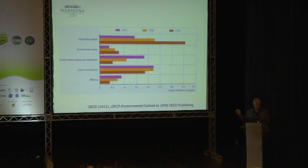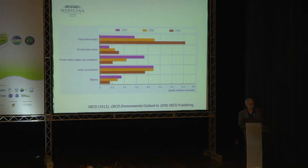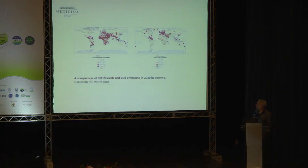This graphic is wrong — we got this projection in 2012. By 2050, it projected about 3.5 million deaths per year from air pollution. But in 2012, 3.5 million people already died because of air pollution.